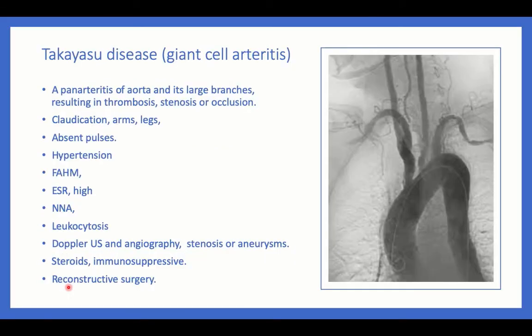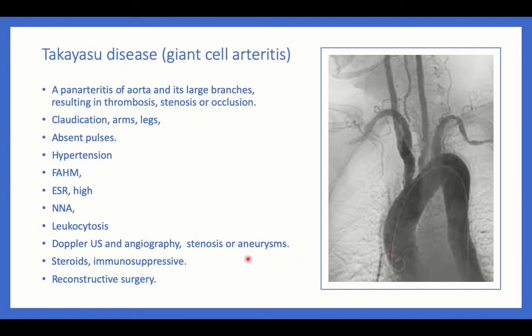Takayasu arteritis is a panarteritis of the aorta and its large branches, where the whole length of the aorta and large branches are affected, resulting in thrombosis, stenosis, or occlusion. This presents with claudication in arms or legs and the very characteristic sign of absent pulses. Associated with hypertension, systemic manifestations, high acute phase reactants, normocytic normochromic anemia, leukocytosis, and thrombocytosis. Diagnostic imaging includes Doppler ultrasound and angiography. Treatment requires steroids, immunosuppressive therapy, and possibly reconstructive surgery.